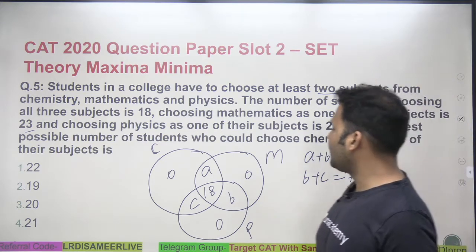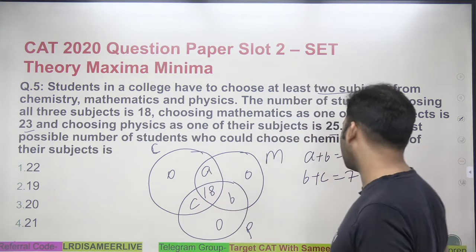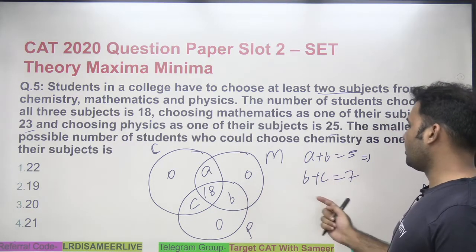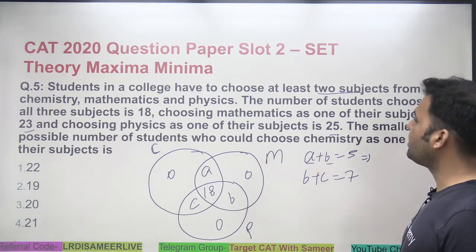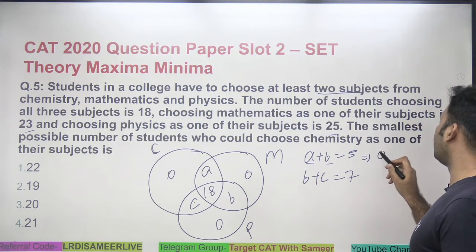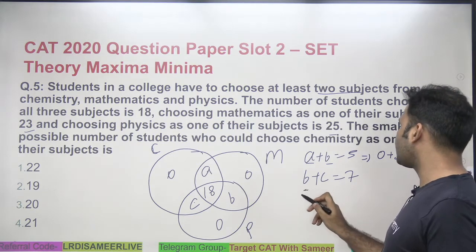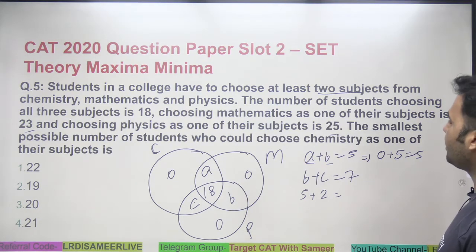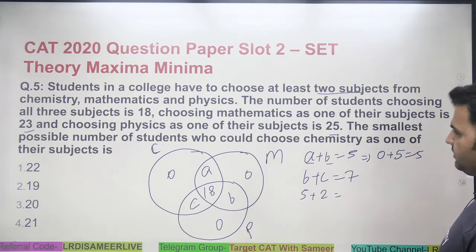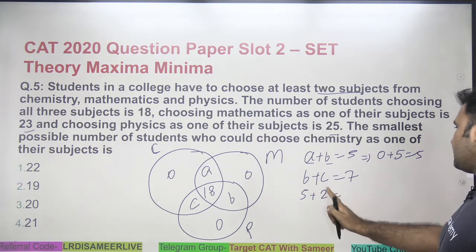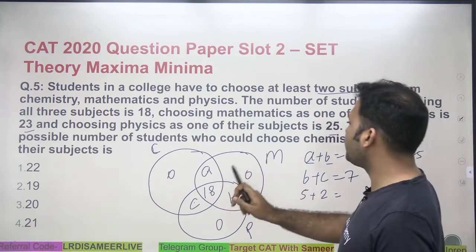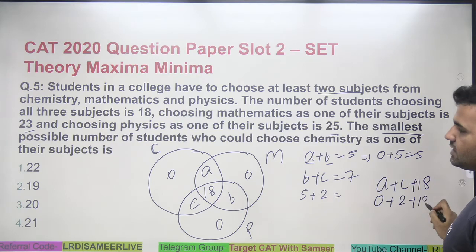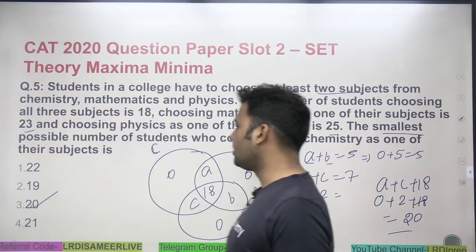We want the smallest possible number choosing chemistry as one of the subjects, so we minimize a + c. To minimize a and c, we maximize b. The maximum b can be is 5 (since a + b = 5 and a ≥ 0), so a = 0 and b = 5. Then c = 7 − 5 = 2. The smallest number choosing chemistry is a + c + 18 = 0 + 2 + 18 = 20. The third option is the correct answer.